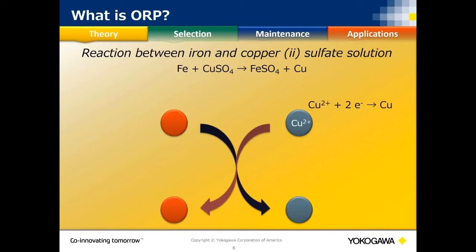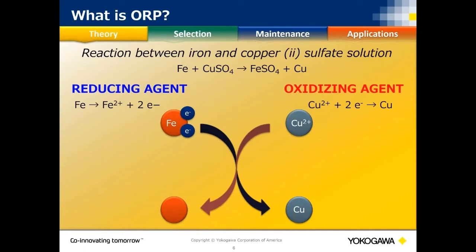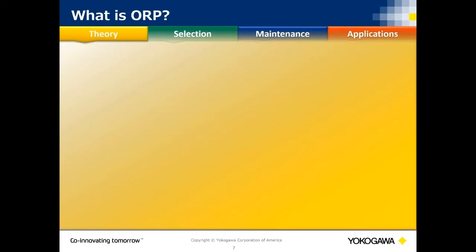Let's look at a real-life example: iron and copper sulfate. The oxidizing agent acts on the copper — it gains two electrons from iron, and copper itself is reduced. This is the reduction reaction, but it's caused by the oxidizing agent because it has the capability of oxidizing something else.